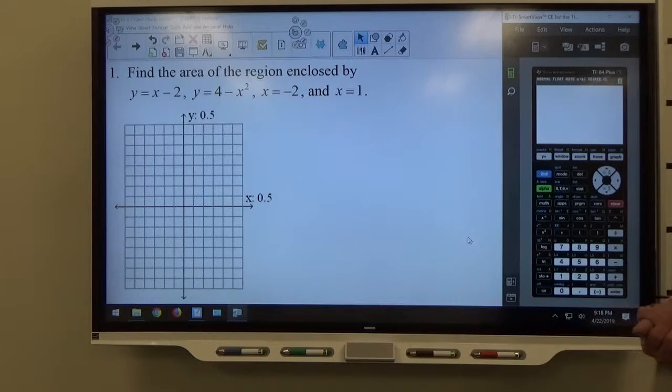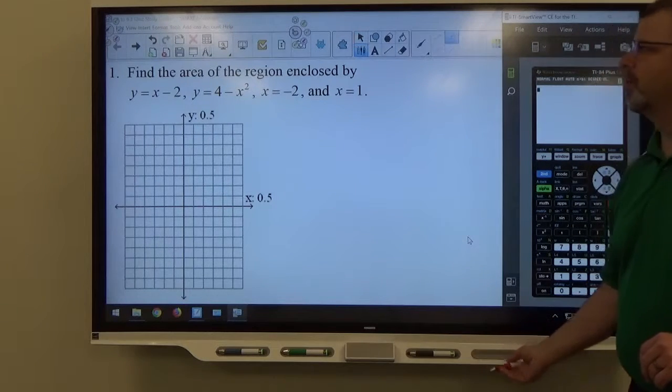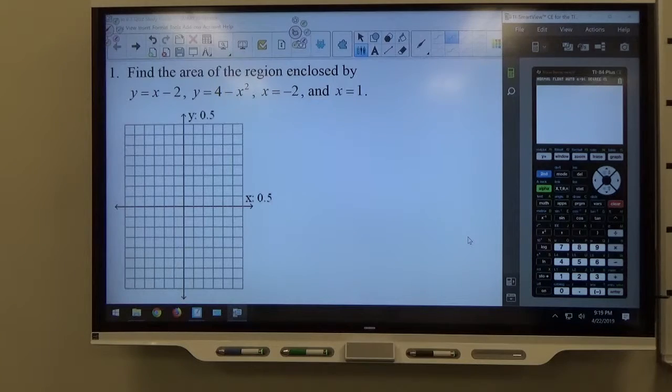Problem number one, find the area of the region enclosed by y equals x minus 2, which is a line, y equals 4 minus x squared parabola, x equals negative 2 vertical line, x equals 1 vertical line.